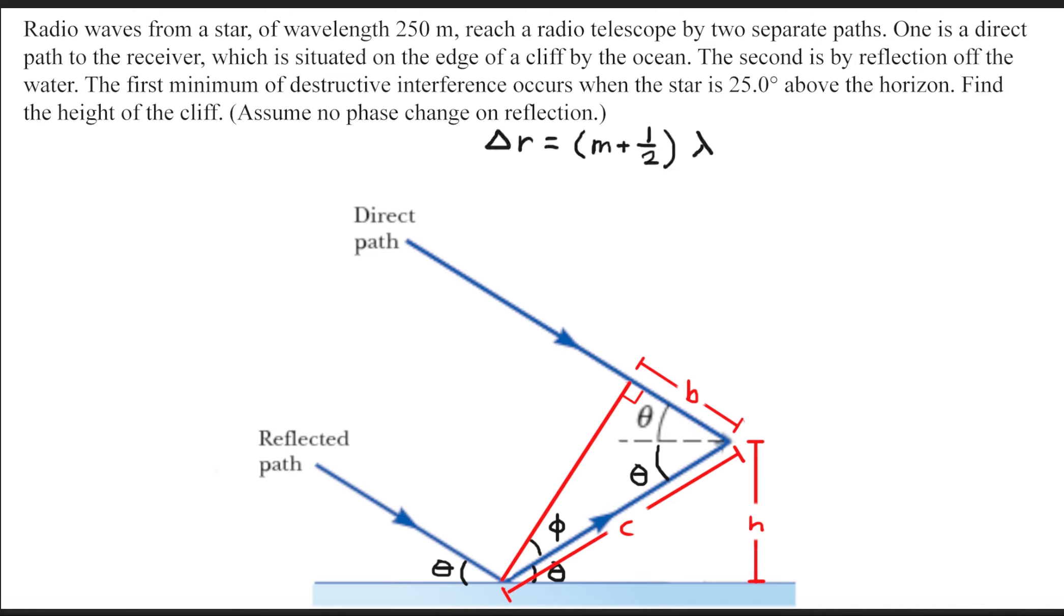Now recall the path difference formula for destructive interference. That formula states that the difference in path length is equal to M plus one-half times lambda, where the M value is simply an integer, a whole integer value. The next thing we need to figure out is what is our delta R value.